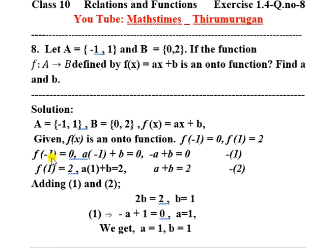Setting up equation 1: f(-1) = 0, so a × (-1) + b = 0, which gives -a + b = 0. This is equation number 1.